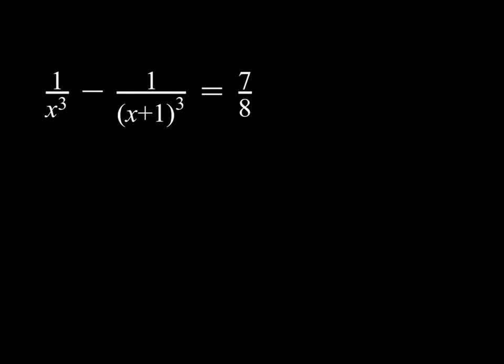I'm going to make some substitutions. Our goal is to go from one variable to two variables. I'm going to call 1 over x as a, so a equals 1 over x, and b is going to be 1 over x plus 1. What is so good about doing this is that we get a difference of two cubes, resulting in the equation a cubed minus b cubed equals 7 over 8.